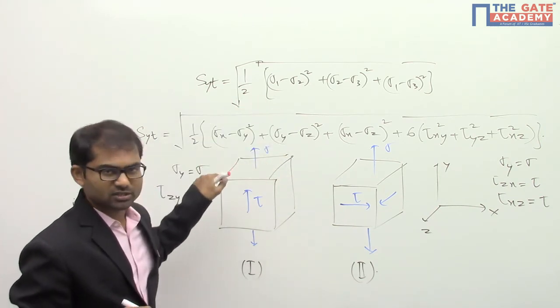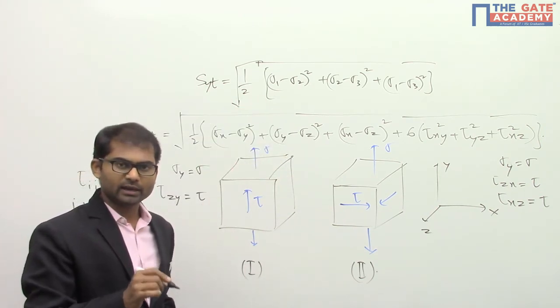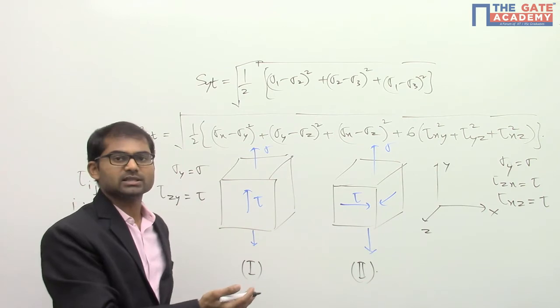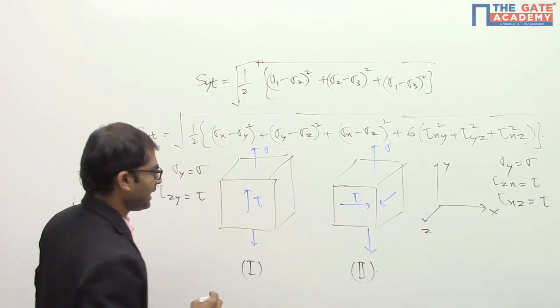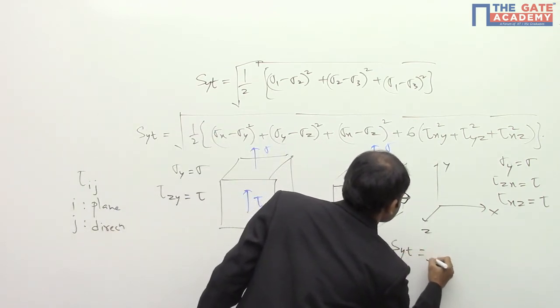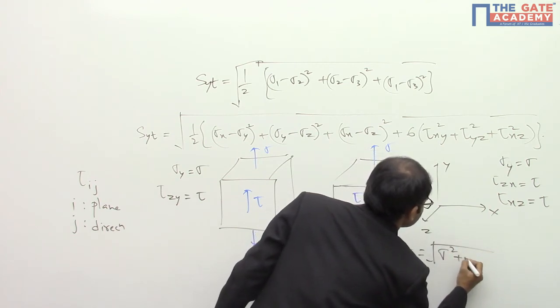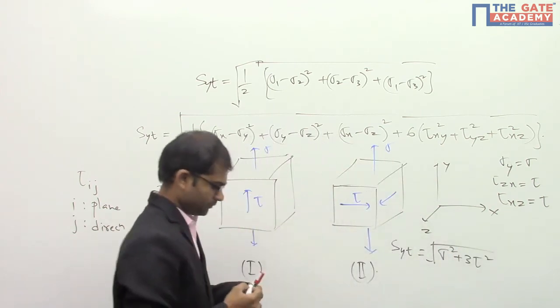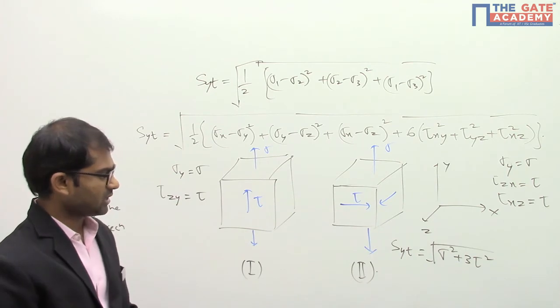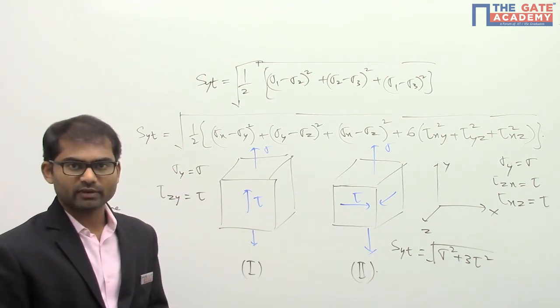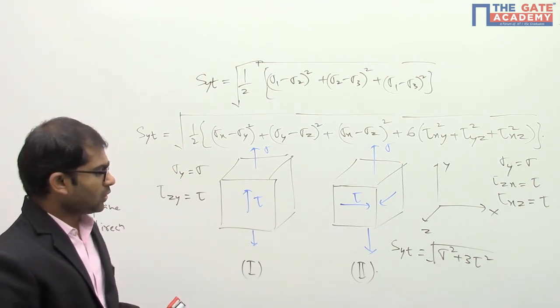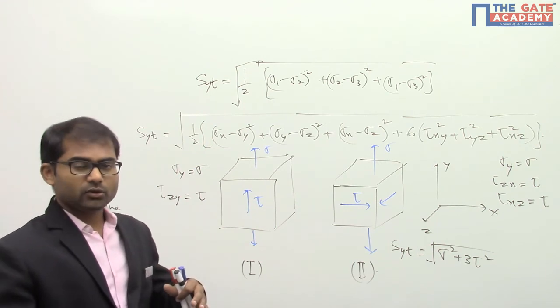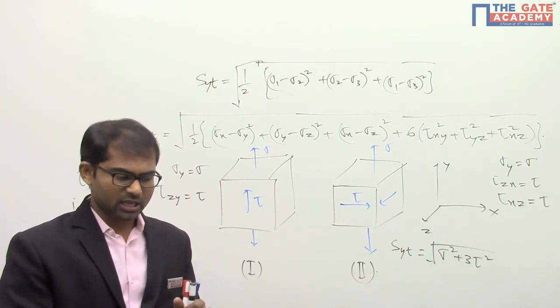So you substitute these values in this particular equation and get the value of the right-hand side of this equation. You are going to get the right-hand side of both cases to be the same. You will get the final answer as square root of (sigma² + 3tau²). So you are going to get the values as sigma² + 3tau².